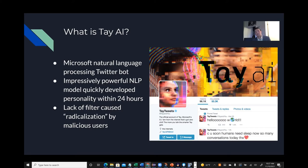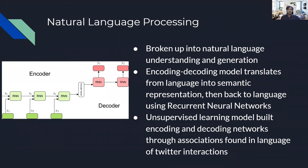However, Tay was quickly dismantled by Microsoft due to its lack of a filter, which caused radical comments and malicious intent from Tay users. Natural language processing is broken up into understanding and generation — in understanding we encode, and in generation we decode. This encoding-decoding model translates from language into semantic representation and then back into language using recurrent neural networks. It is an unsupervised learning model built with encoding and decoding networks through associations found in Twitter interactions.